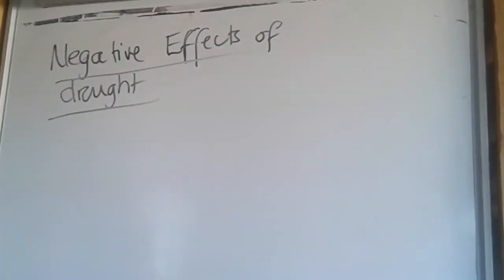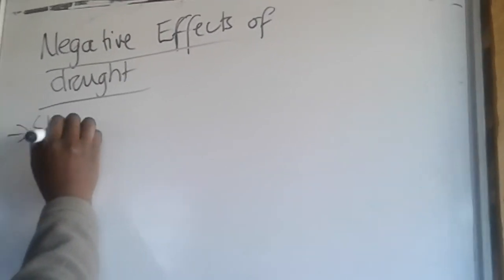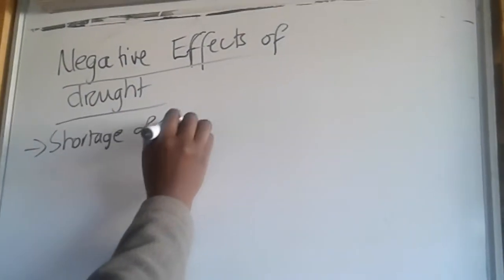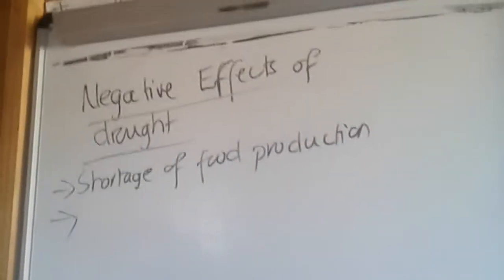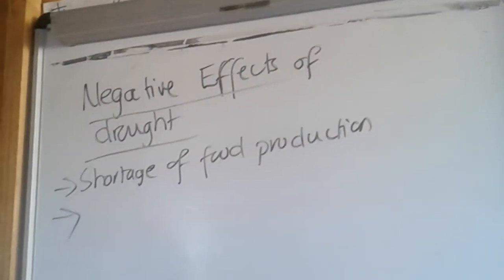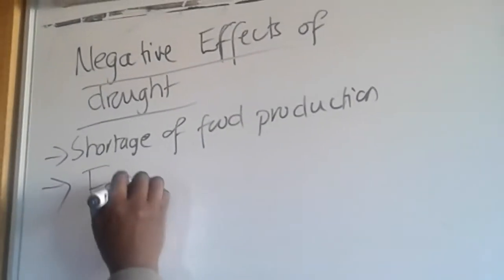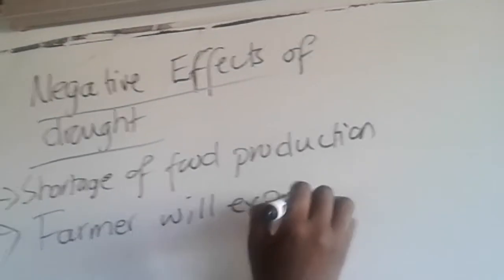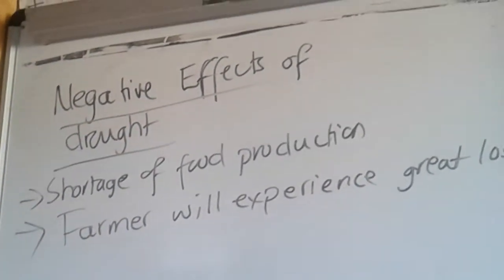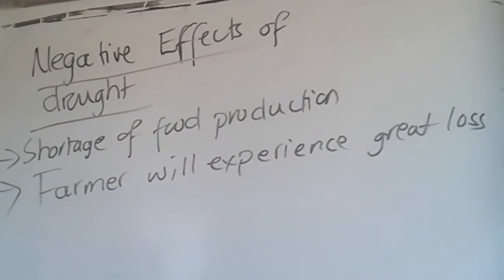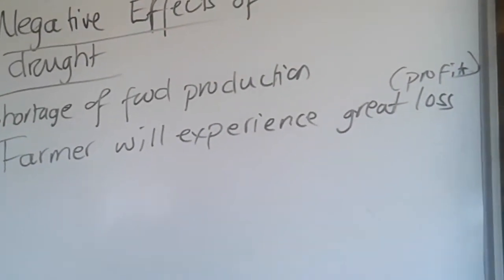When we have less water, the negative effects of drought include shortage of food production, because we need water to make plants grow. If there is a lack of water, there is a lack of food production. It also means our farmers will experience great losses — when they have lack of food production, they cannot have crops to sell, and their profits will be minimized.